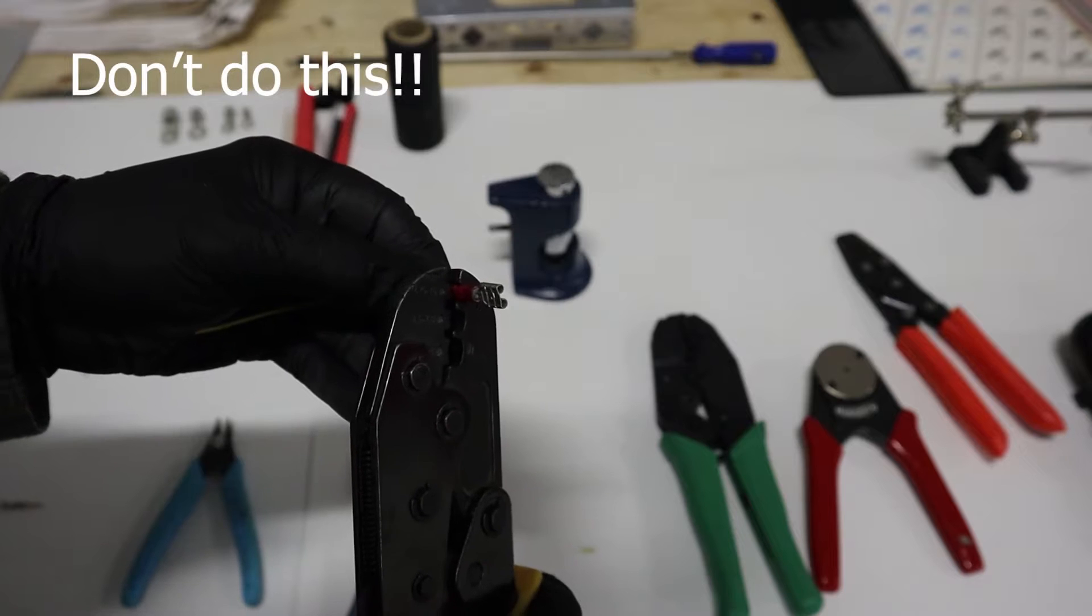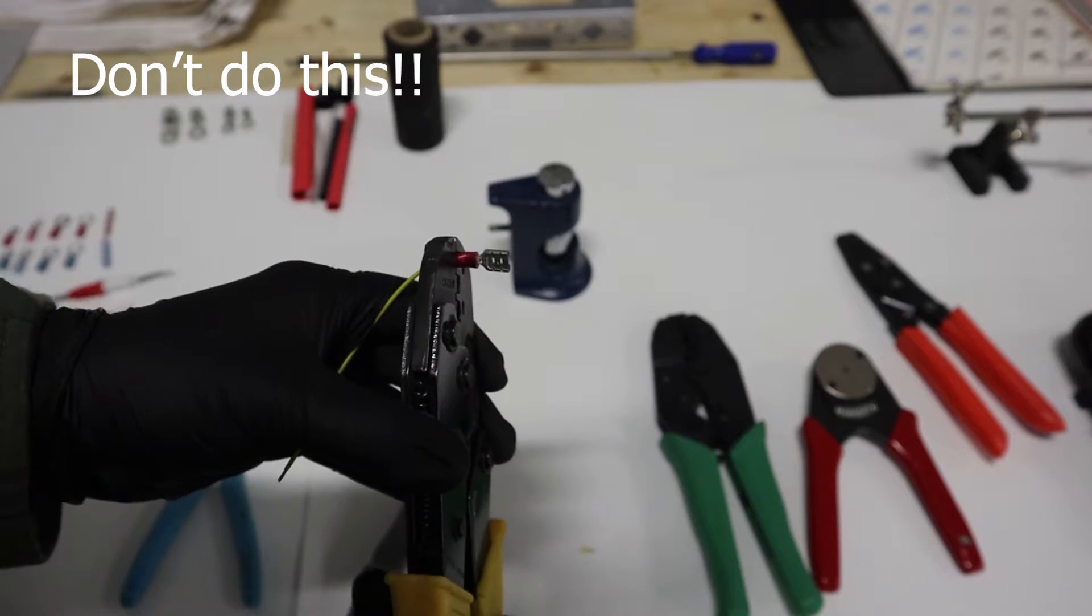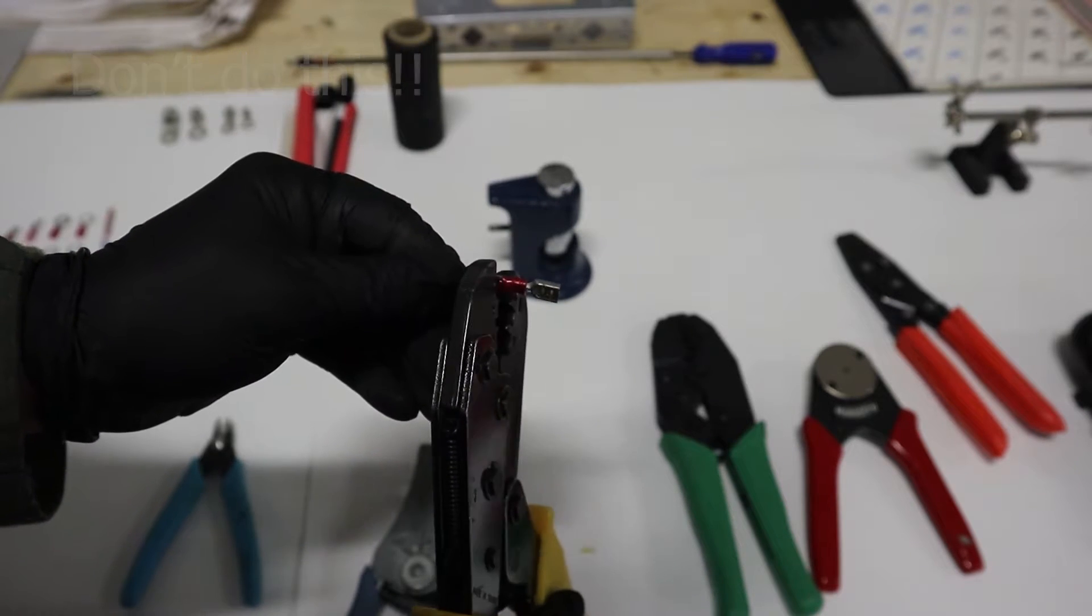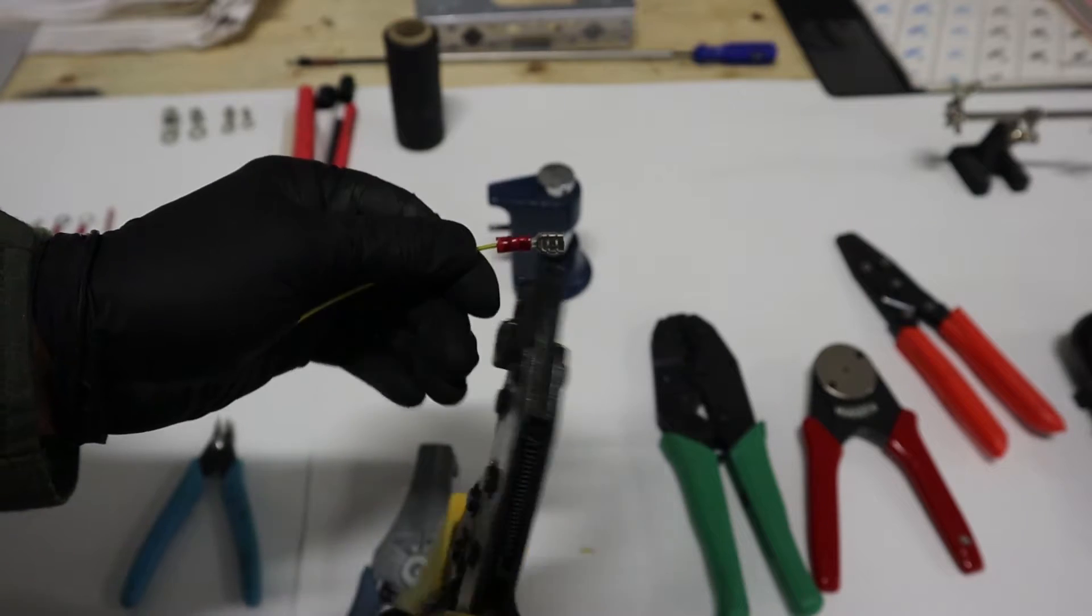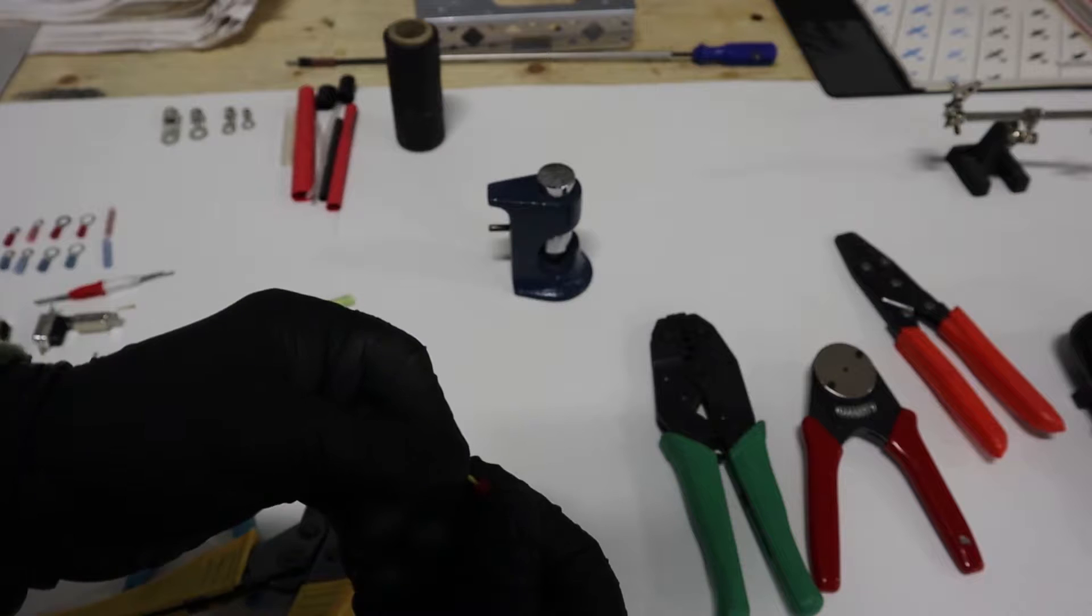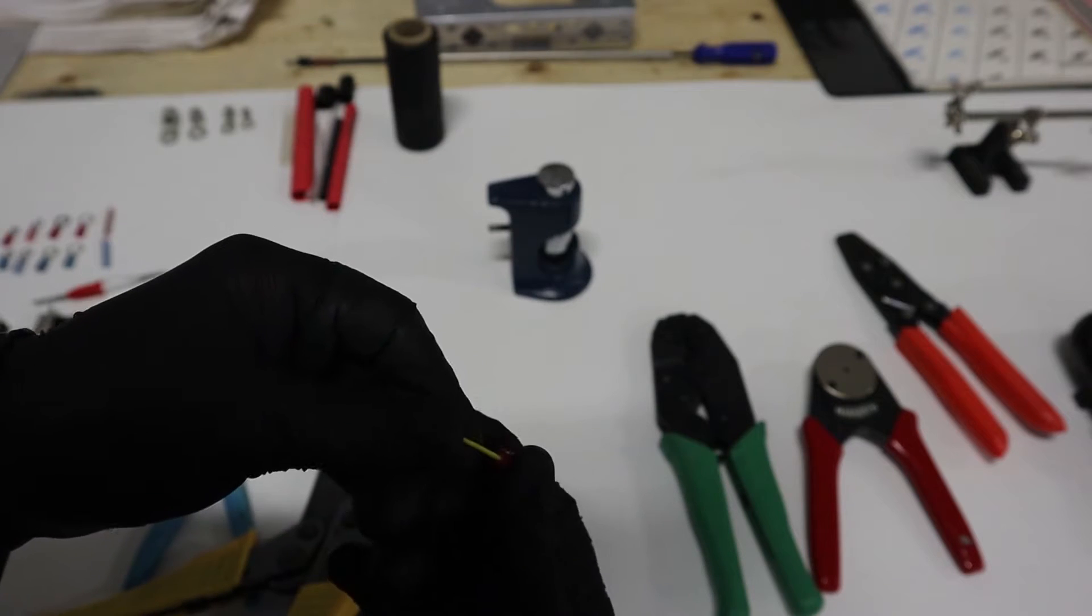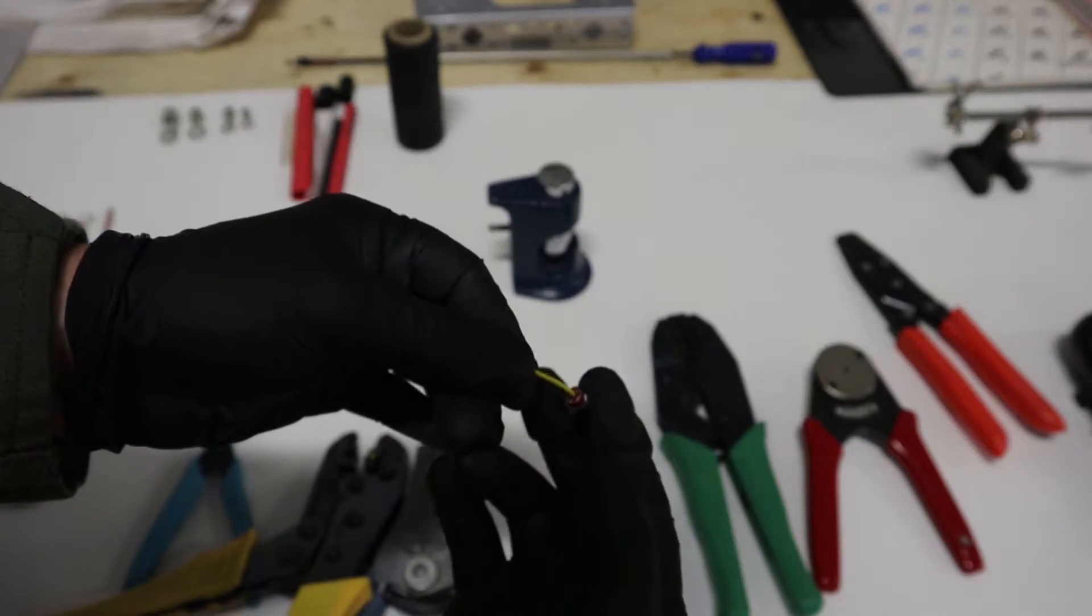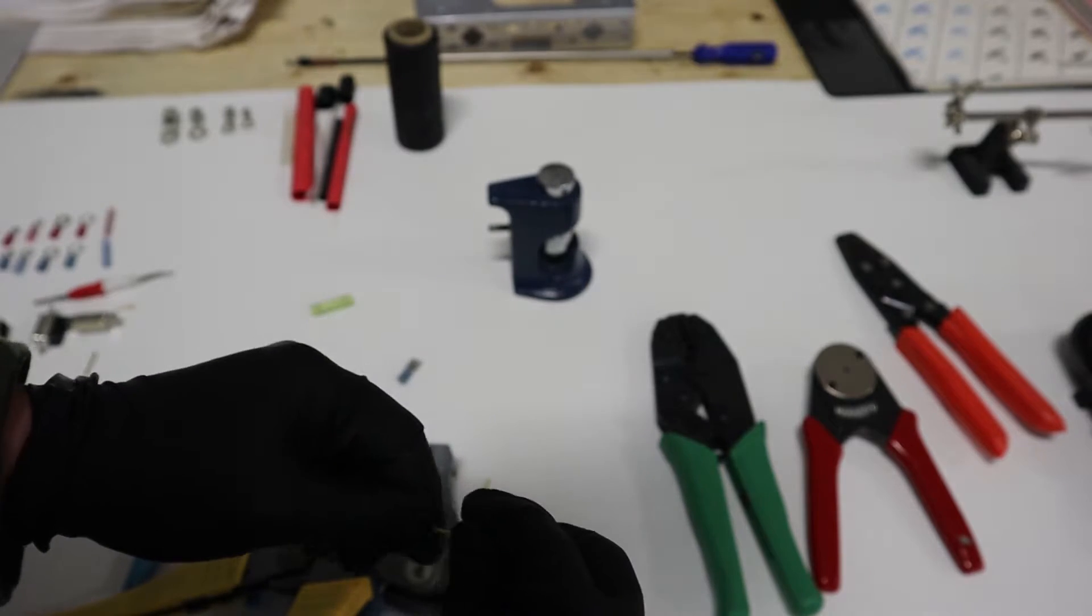Resist the urge to squeeze it twice. I worked on an aircraft once that was having lots of electrical problems, and the root cause was the builder was crimping as normal but then was crimping it again at the base, and that was causing stress in the wire and causing the wire to break in several spots.